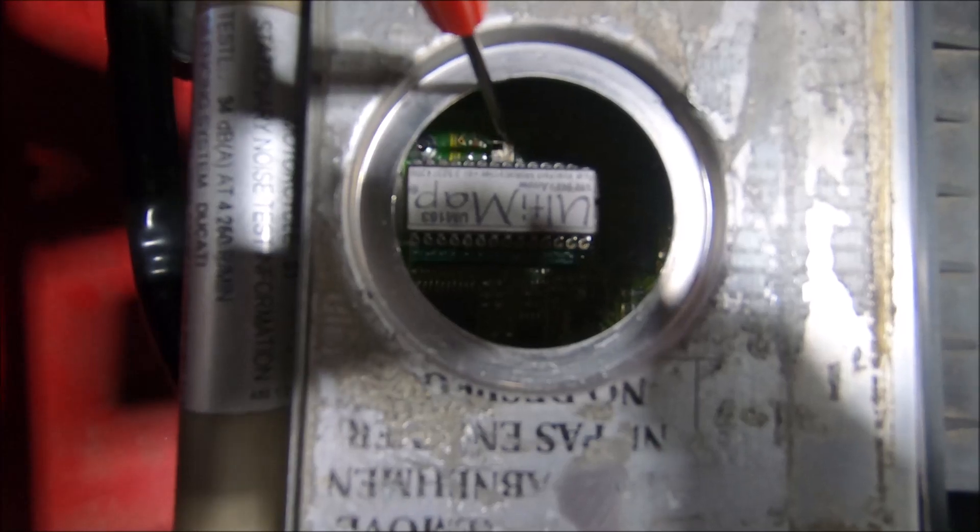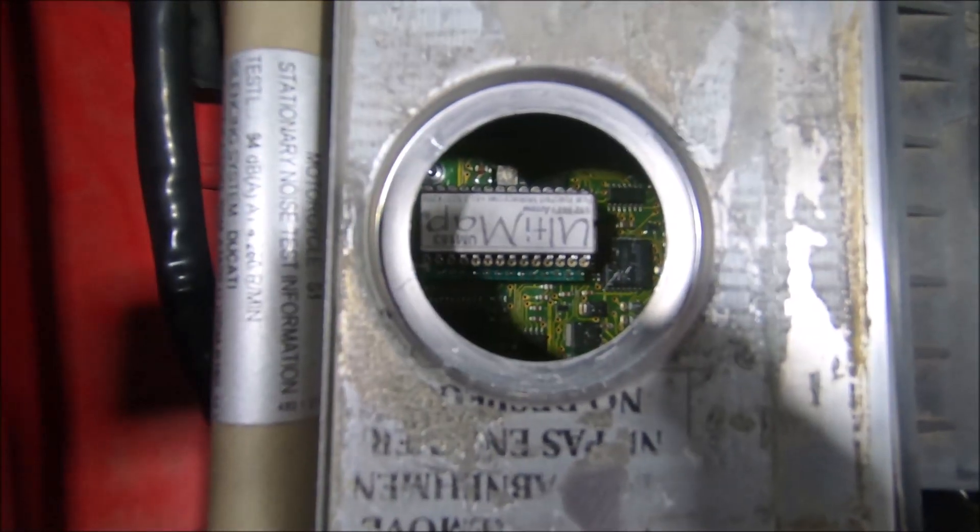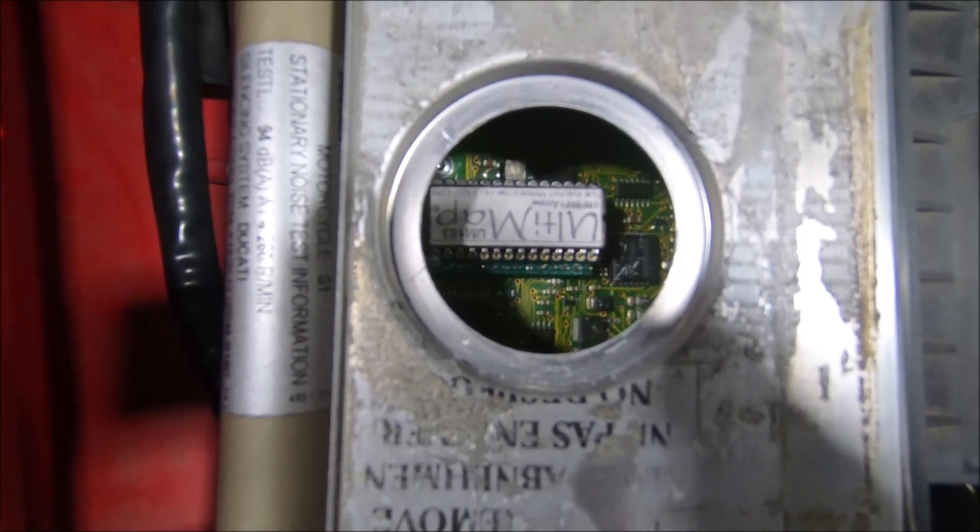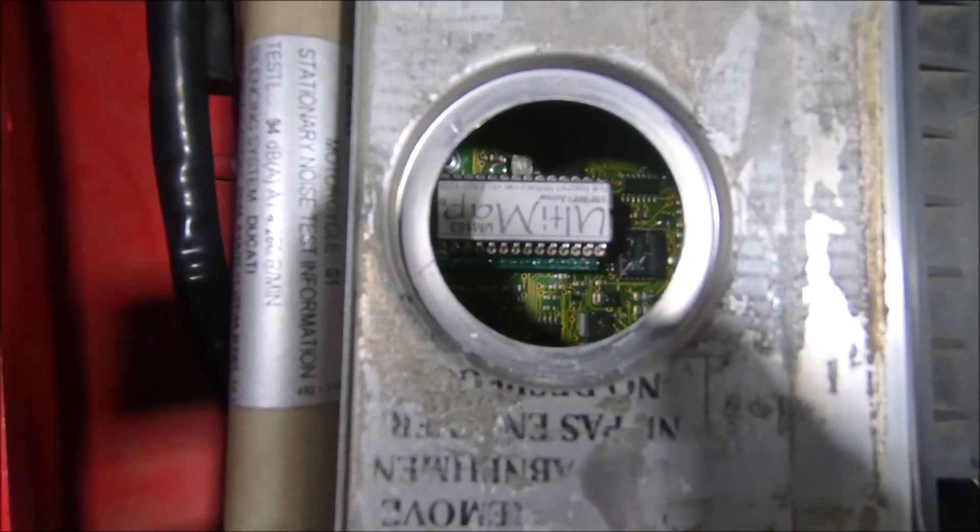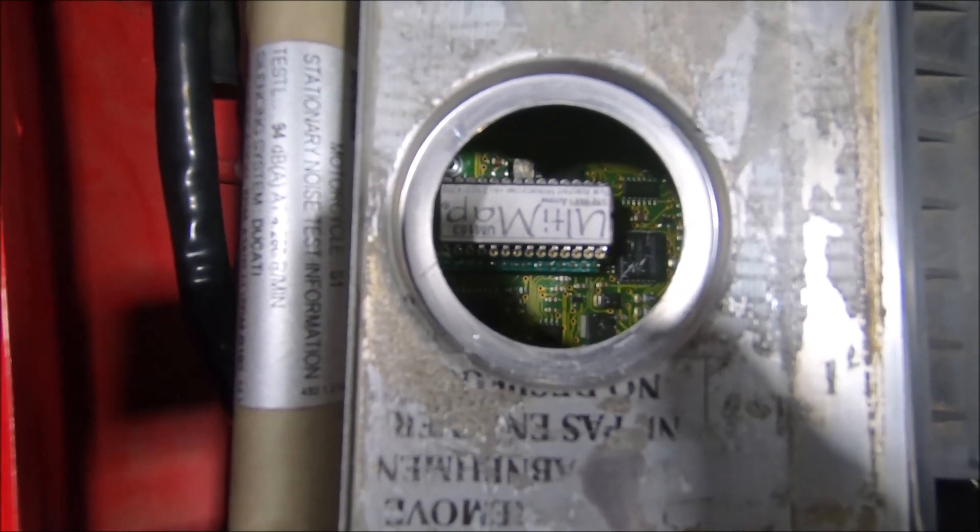The trim pot is this little thing here and it's just a little potentiometer. It has a total travel of 270 degrees, which is 135 degrees either side of the midpoint.